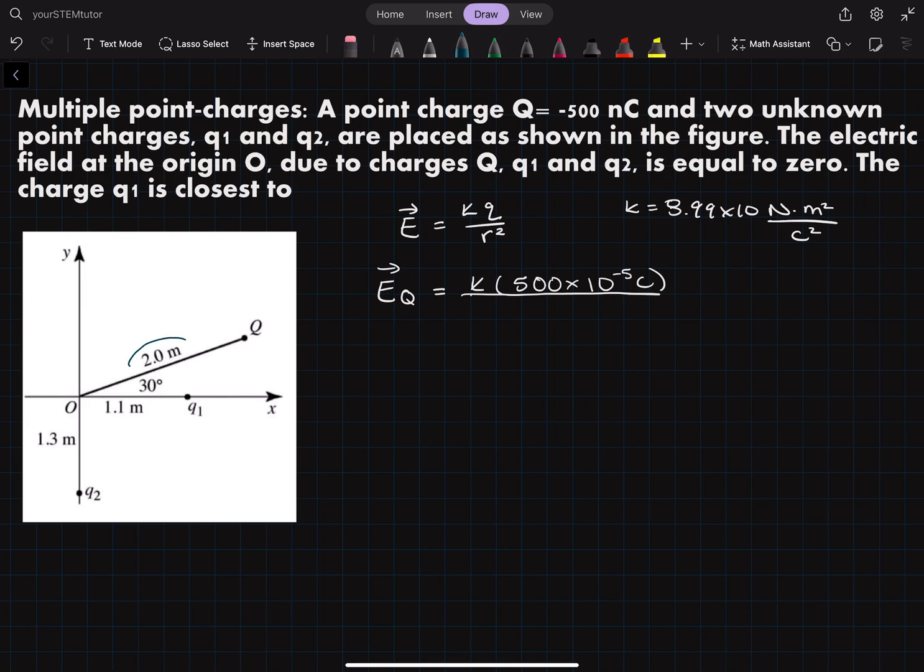We'll divide it by the radius which here we have 2 meters, so we'll just do 2 squared and then when we put that through our calculator we'll get 1.12 times 10 to the power of 3.